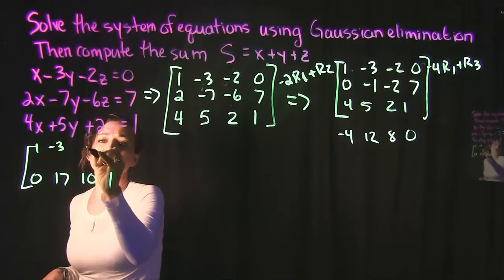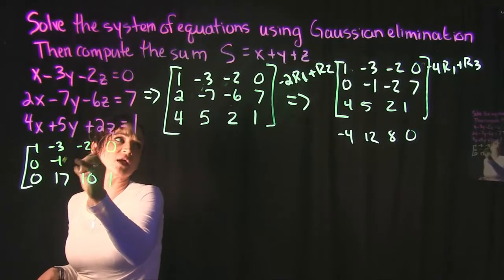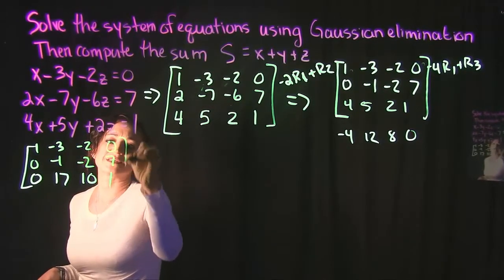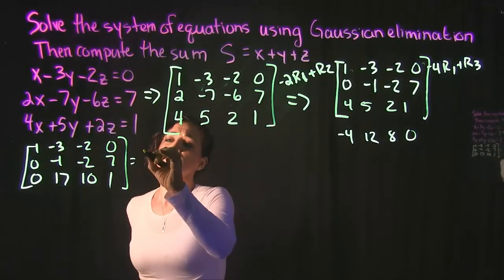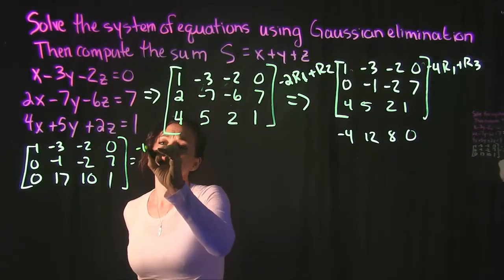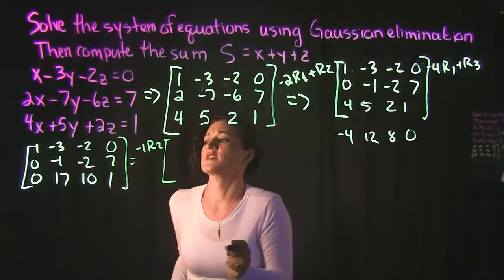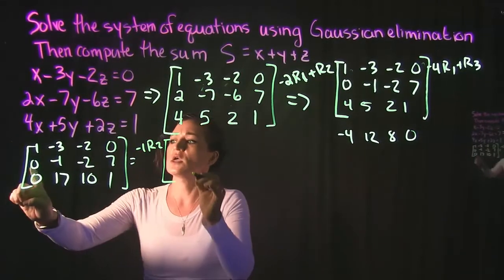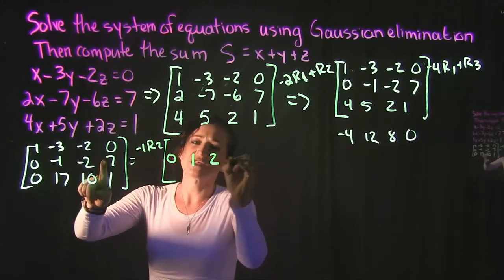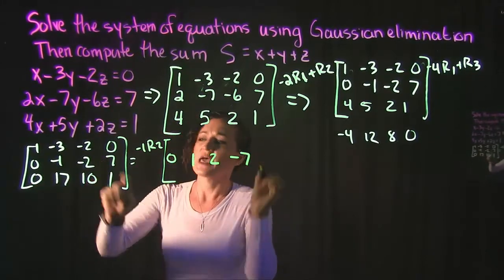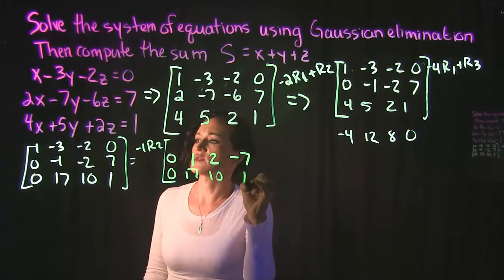Everything else stays the same — the other two rows remain 1, -3, -2, 0 and 0, -1, -2, 7. In our next step we're going to take row 2 and multiply it by negative 1 to change the sign of everything in row 2. Doing that we get 0, 1, 2, and -7.